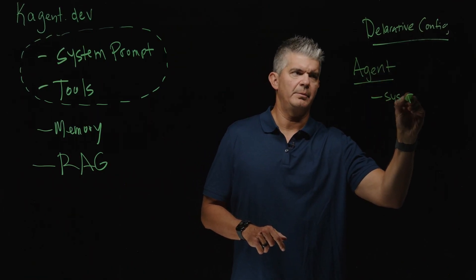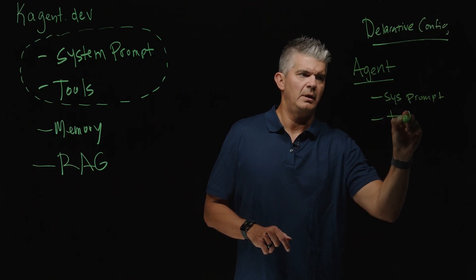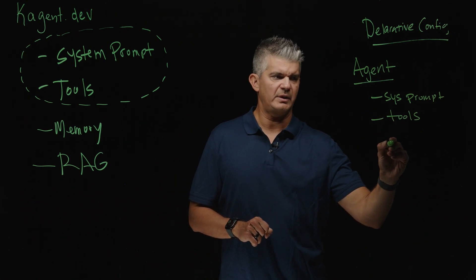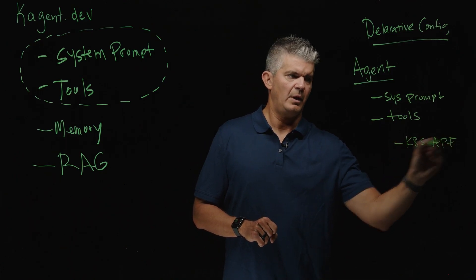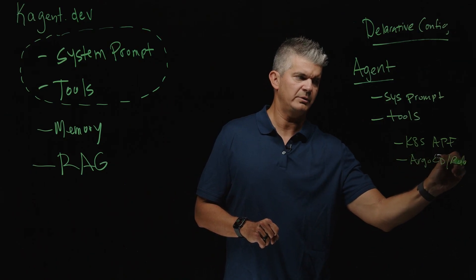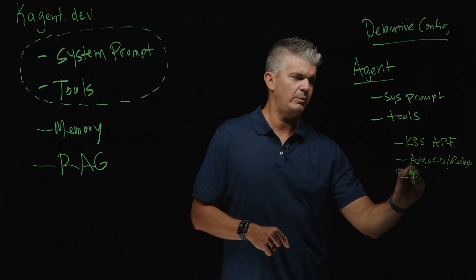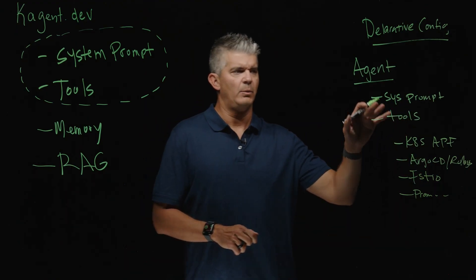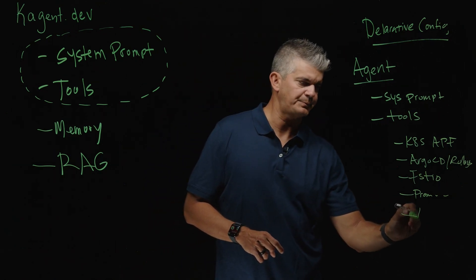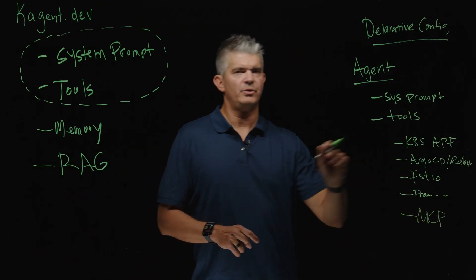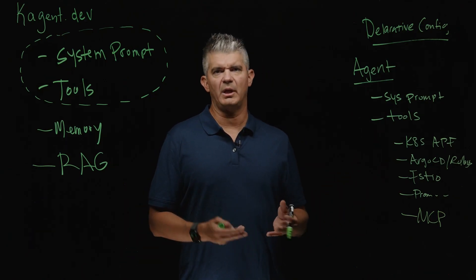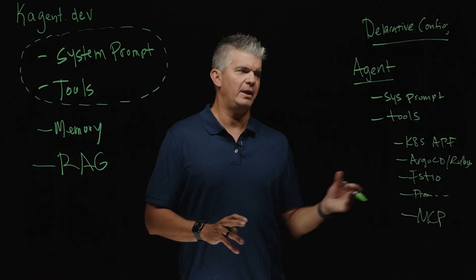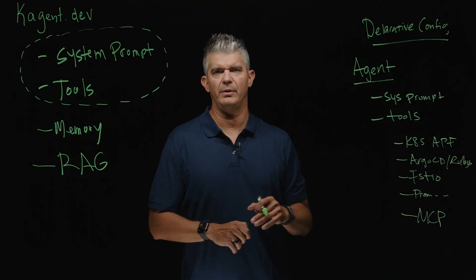If you look at the kagent project, you'll see that we have tools out of the box for things like talking to the Kubernetes API, Argo CD, Argo Rollouts, Istio, Prometheus, and a few others. The interesting bit is that with the MCP protocol — the Model Context Protocol — that extends the reach for tools to anything that talks MCP. If you look up MCP servers, you'll find things like talking to databases, talking to the file system, talking to GitHub, and you can just pull those in and give your agent access to all of those other tools.